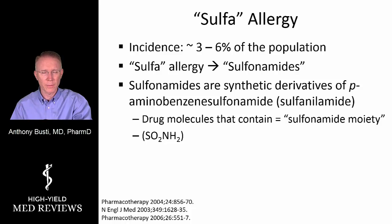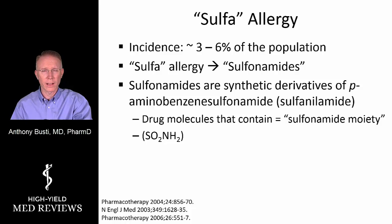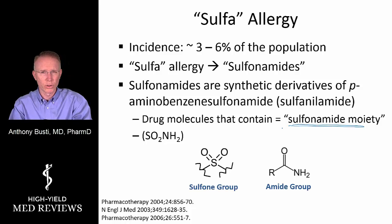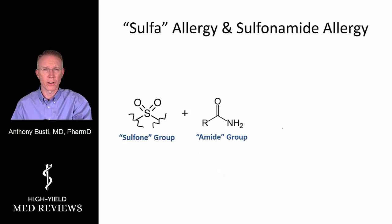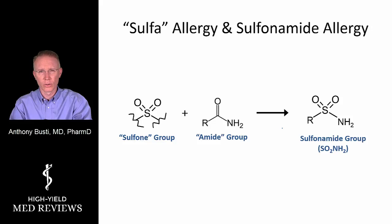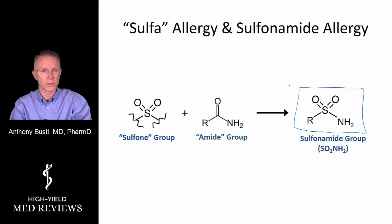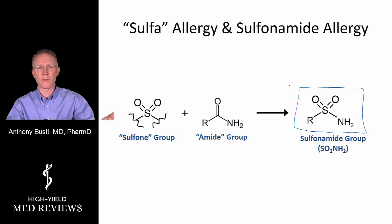What is the sulfonamide moiety? It comes from sulfanilamide, an antibiotic, and its derivatives. The main component is made up of two groups: a sulfon group and an amide group. When those two come together, they form the sulfonamide group. This structure is key — any drug containing it may have cross-reactivity if someone is truly allergic, which is why the warning pops up.